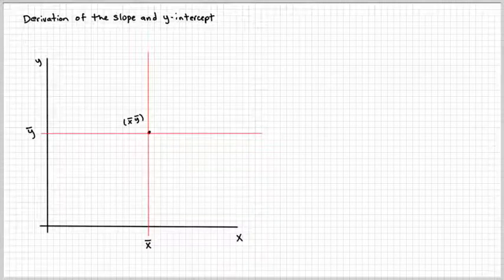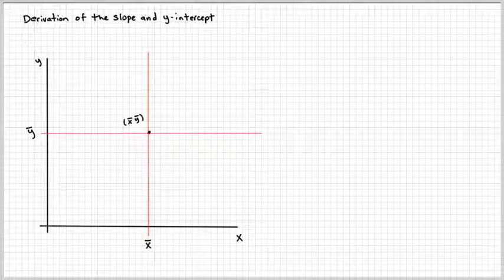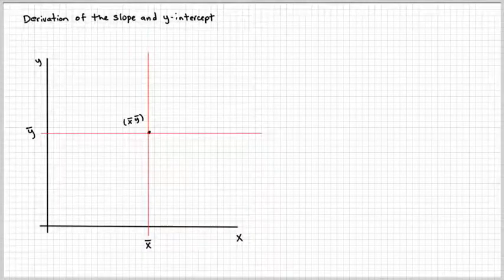So all regression lines have an x-bar, y-bar. X-bar meaning the mean of x and y-bar meaning the mean of y. And you can draw a vertical and horizontal line representing the x-bar and y-bar.